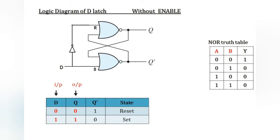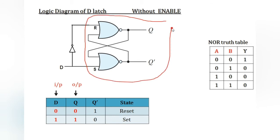This is the logic diagram of D latch. This part is the SR latch joined with a direct input and an inverted input — this circuit without an enable pin is called D latch. To operate this, we need to know the truth table of the NOR gate.